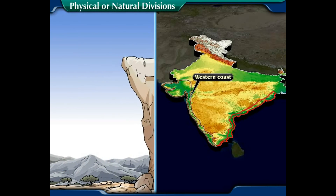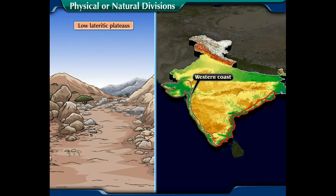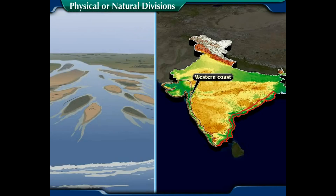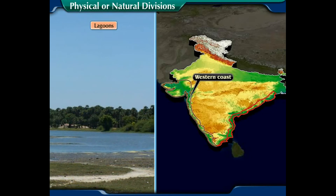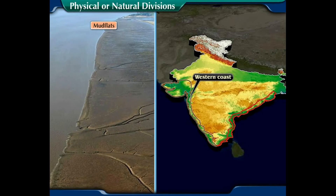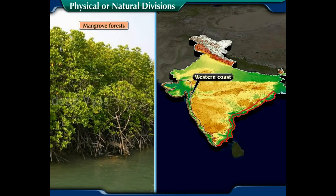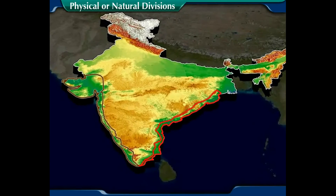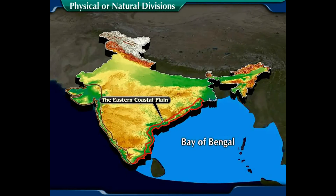Number two, the western coast has uneven topography composed of eroded remnant ranges, low lateritic plateaus, and a coastline of alternating bays and headlands. Number three, the coast has estuaries, backwaters, lagoons, mudflats, swamps, salt marshes, mangrove forests, and clean and beautiful beaches. The eastern coastal plain stretches between the Bay of Bengal and the Eastern Ghats and has many deltaic plains.